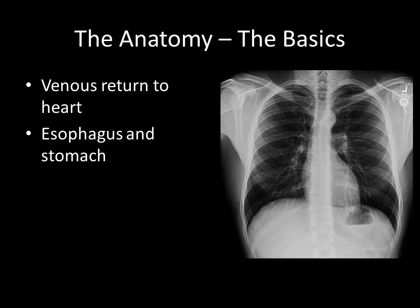We'll quickly review the pertinent anatomy just to understand where the tubes and lines are and where you'll be looking for them on chest films. For the peripherally inserted catheters, the PICs, and the centrally inserted catheters, we're talking about venous return to the heart. For the GI tubes, we'll talk about the esophagus and the stomach, because that's primarily where we're dealing with them.